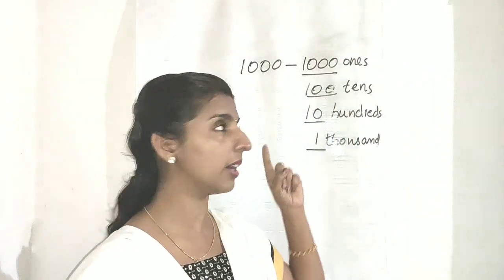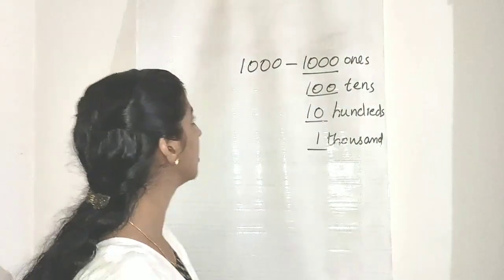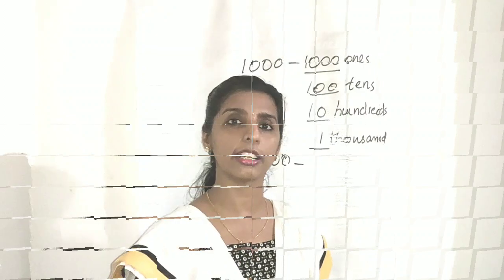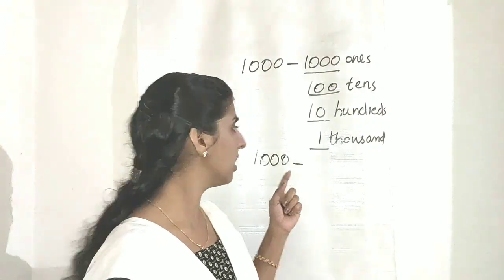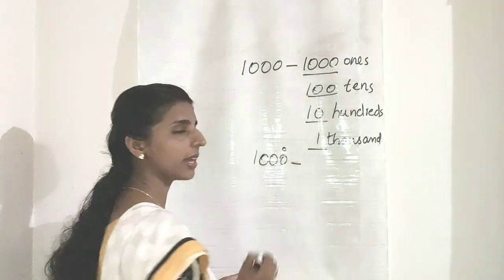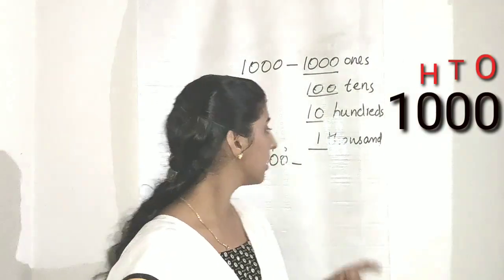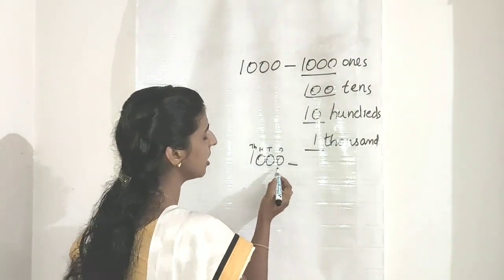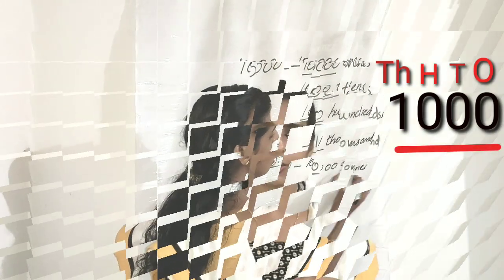Is there any trick to find this out? Let's see. For thousand, we want to find how many ones are there. First we write the place of each digit. The places are: ones, tens, hundreds, thousands. We want to write how many ones are there — ones place is here — so we write all of it: thousand ones.